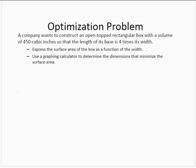First thing I'm going to do is draw a picture. Let me draw a box. It's open-topped, so I'll say that part's open. If we say that this is our width and this is our length and this is our height, we know the volume is 450 cubic inches and we want to express the surface area of the box as a function of the width.